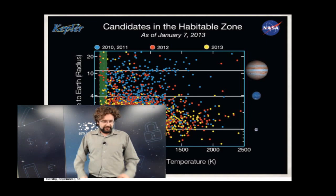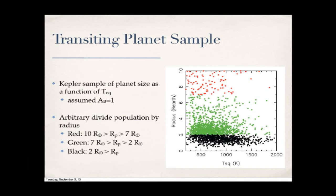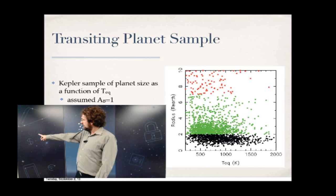I'll break that plot up arbitrarily by planet size. Red ones are Jupiter-sized: 7 to 10 Earth radii. Green are potential Neptune-sized: 2 to 7 Earth radii. Black is small: under 2 Earth radii. Even the smallest ones at 2 Earth radii have many candidates with temperatures between 1,500 and 2,000 Kelvin.